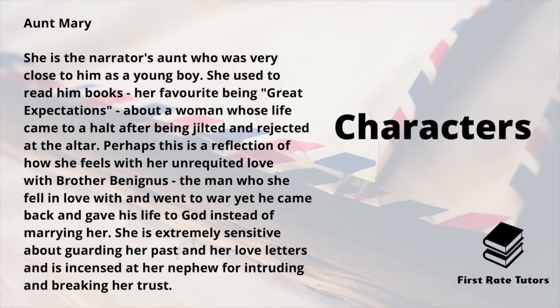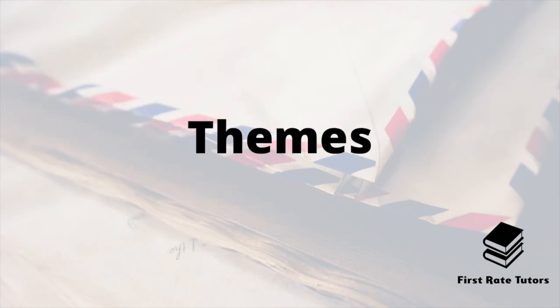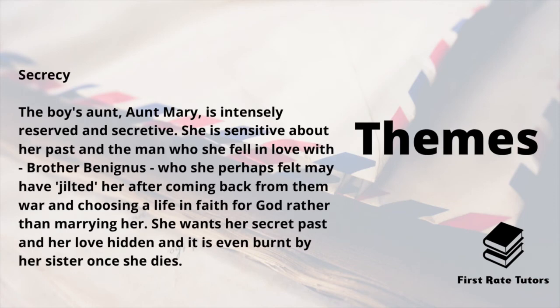Aunt Mary is extremely sensitive about guarding her past and her love letters, and is incensed at her nephew for intruding and breaking her trust. When it comes to the theme of secrecy — aptly important given the title — Aunt Mary is intensely reserved and secretive. She's sensitive about her past and the man she fell in love with, Brother Benignus, who she perhaps felt jilted her, just as Miss Havisham in Great Expectations was jilted at the altar after he came back from the war and chose a life of faith rather than marrying her. Aunt Mary wants her secret past and her love hidden, and her secret letters are ultimately burnt by her sister once she dies.